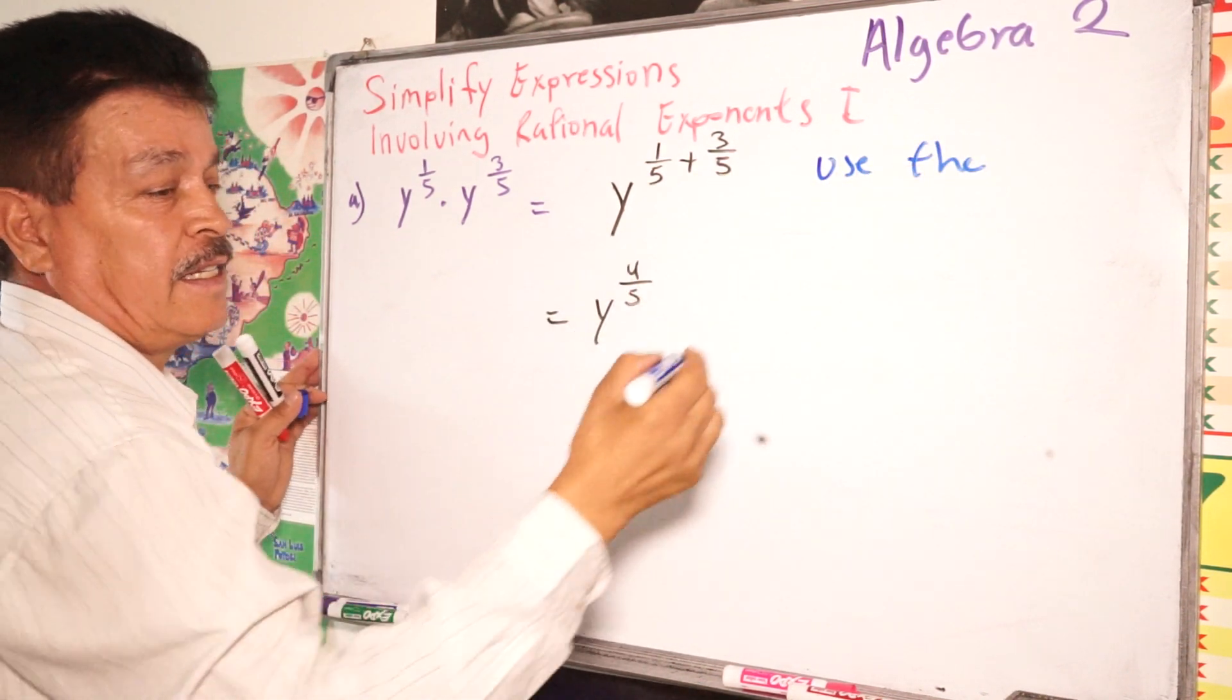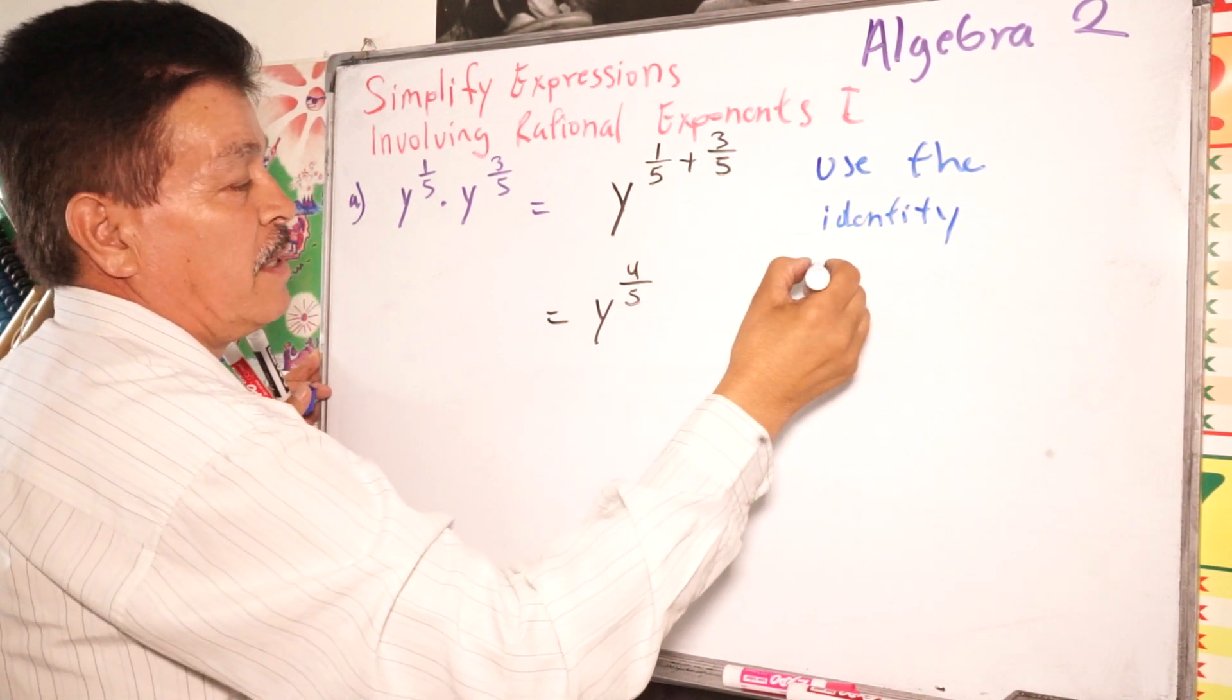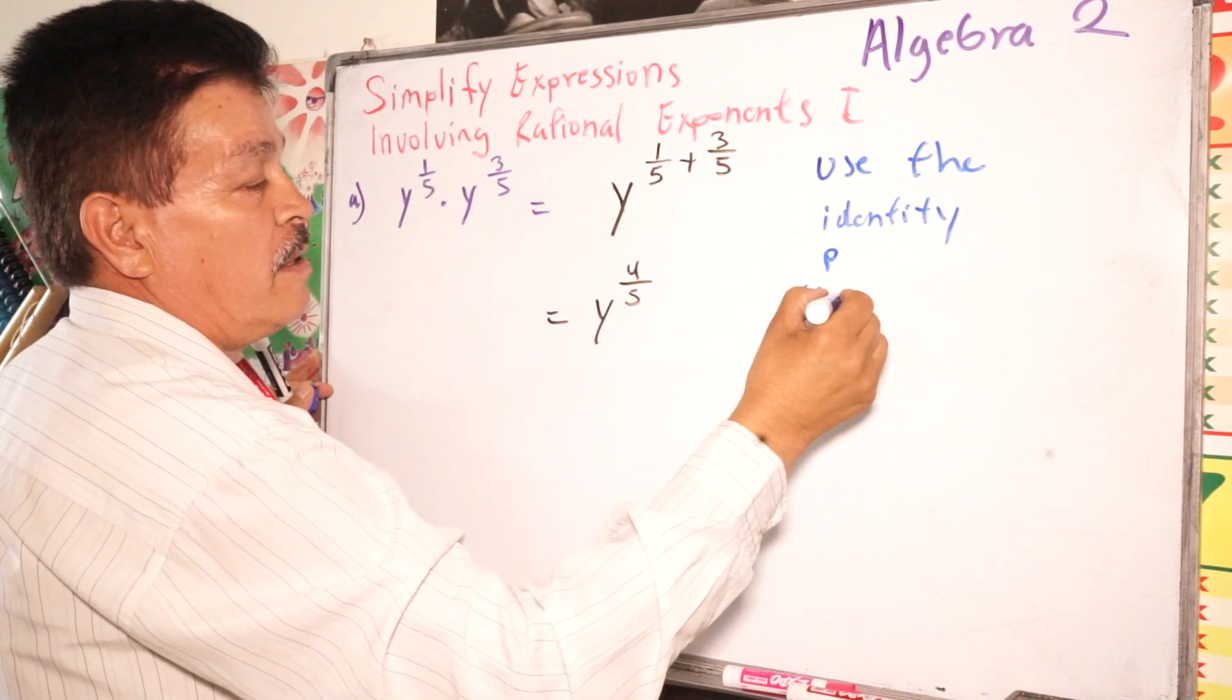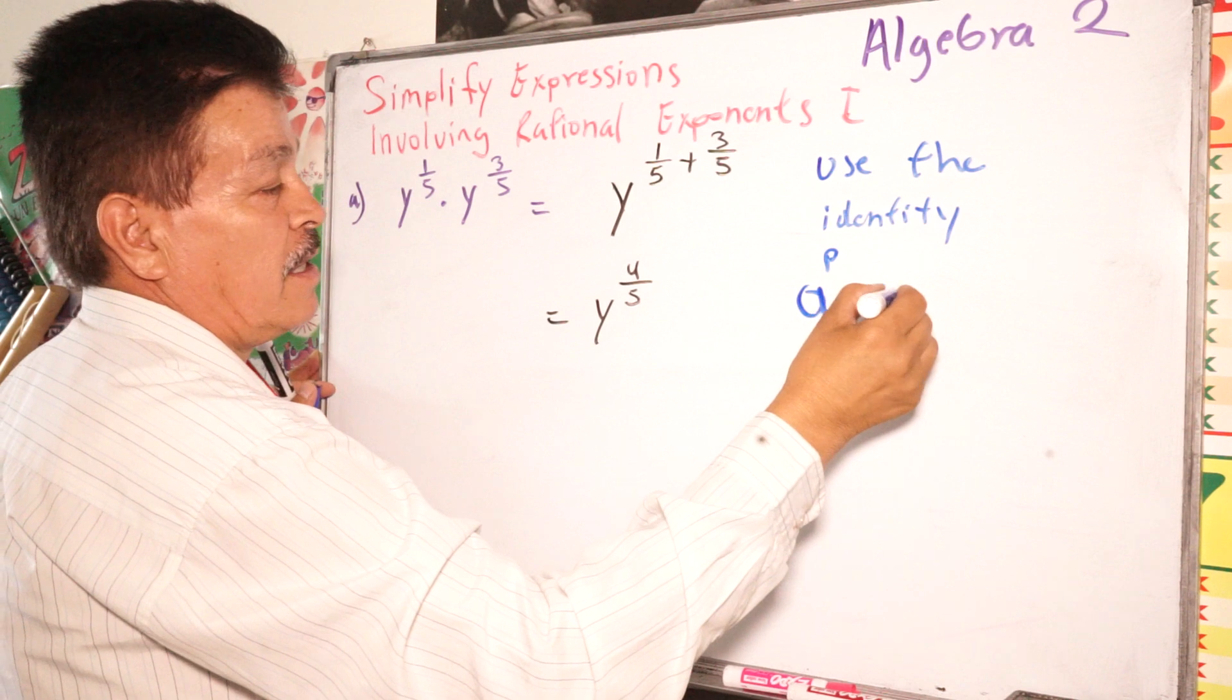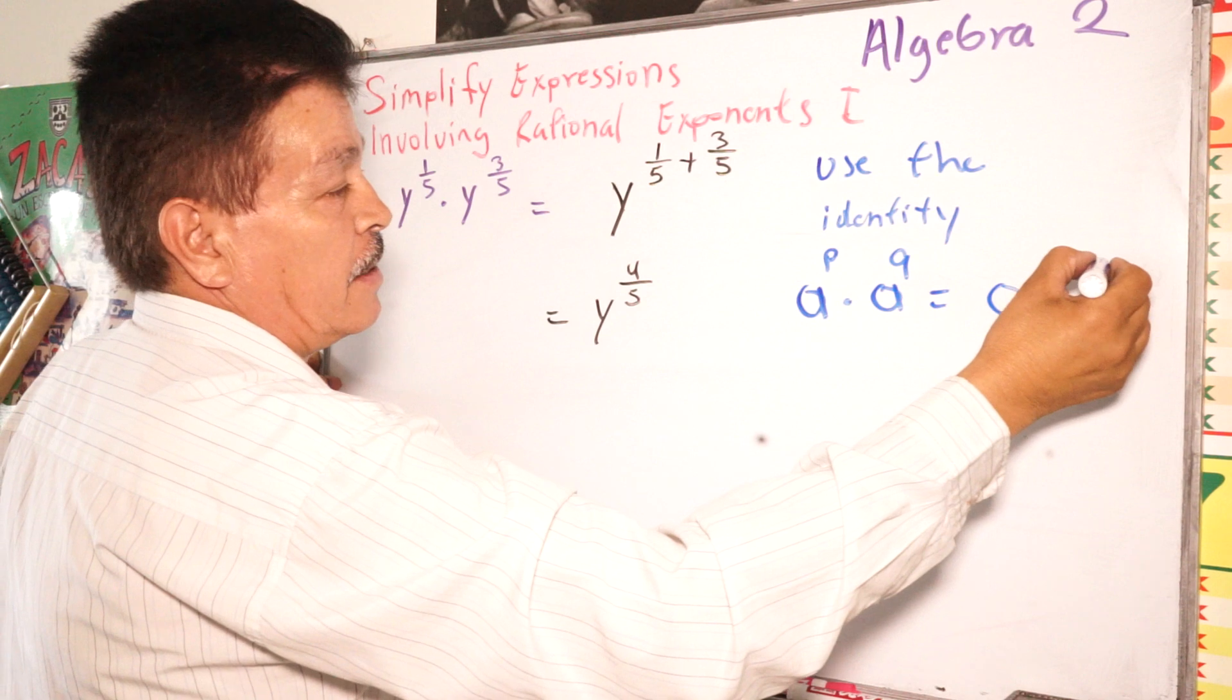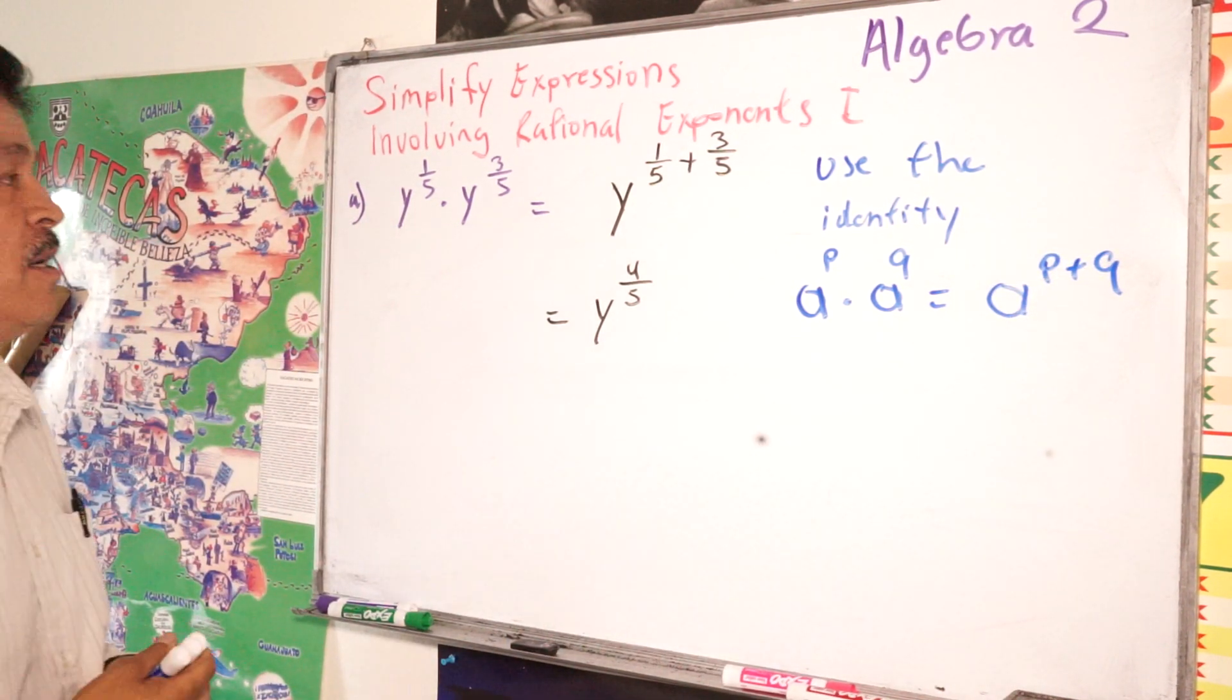The identity, which one? Remember, in this case, A to the P power times A to the Q power equals A to the P plus Q. That's the rule that we apply in this problem. Alright?